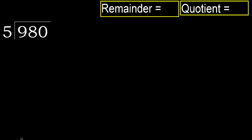980 divided by 5. 9 is not less, therefore with 9. 5 — multiply by which number is nearest to 9 but not greater. 5 multiplied by 2 is 10, 10 is greater. Multiplied by 1 is 5, it is not greater. 9 minus 5 is 4.